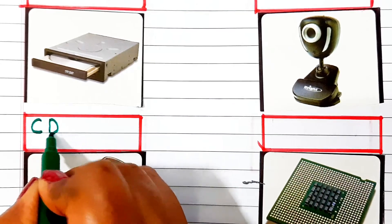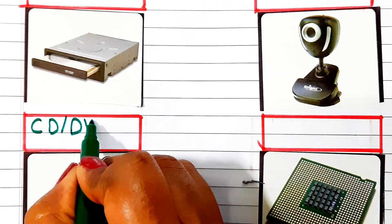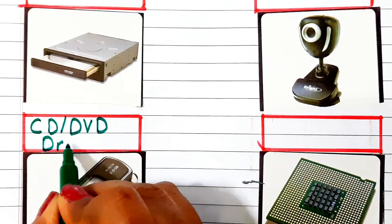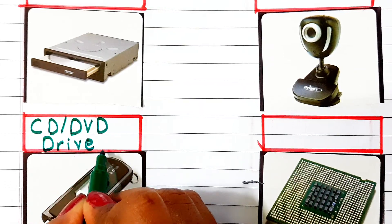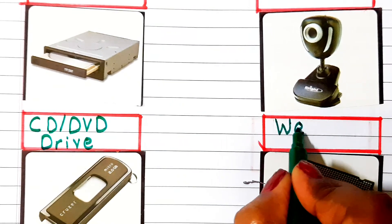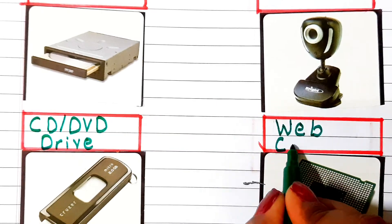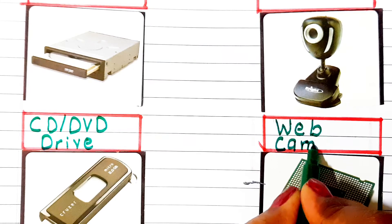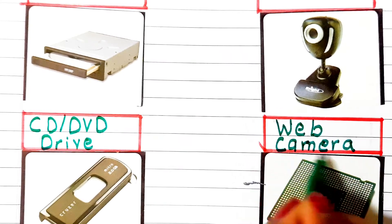C D / D V D D R I V E — CD or DVD drive. W E B C A M E R A — Web camera.